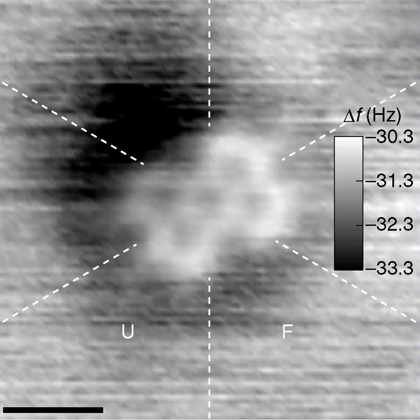A covalent bond is a chemical bond that involves the sharing of electron pairs between atoms. These electron pairs are termed shared pairs or bonding pairs, and the stable balance of attractive and repulsive forces between atoms, when they share electrons, is termed covalent bonding.